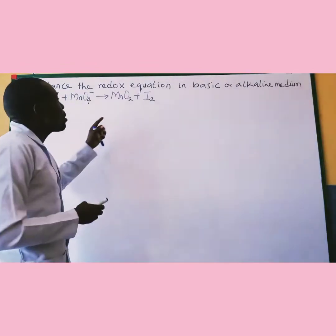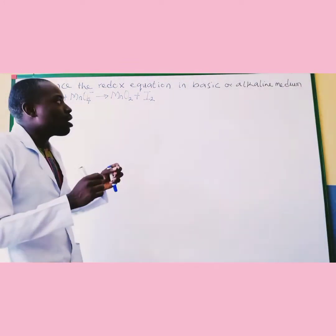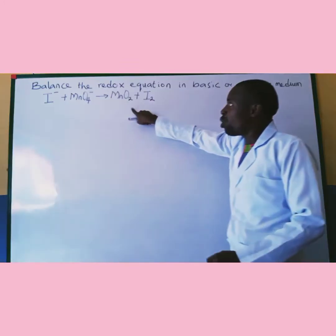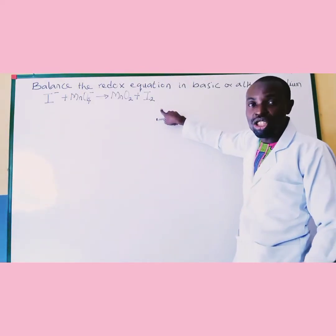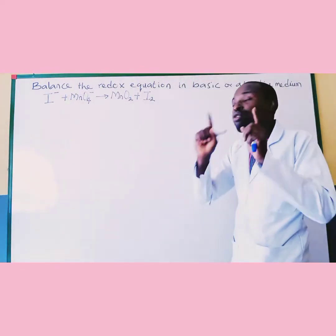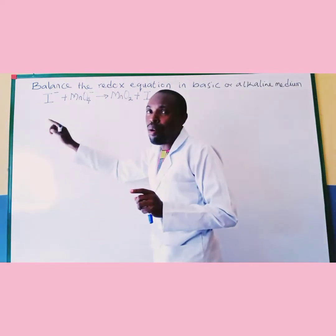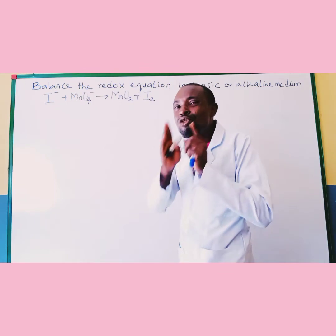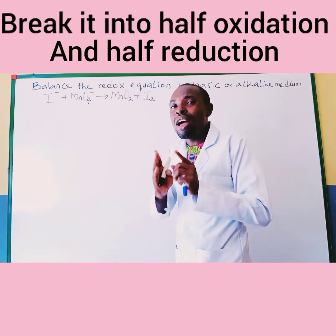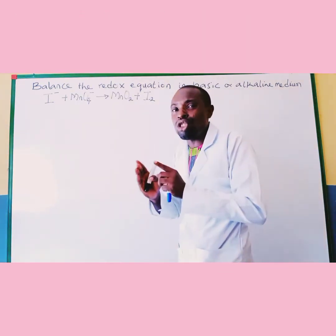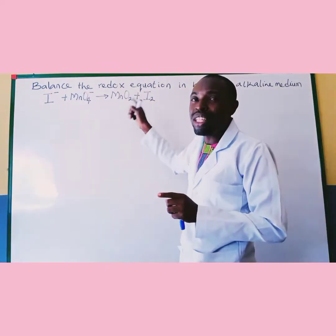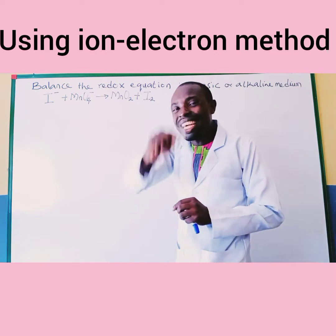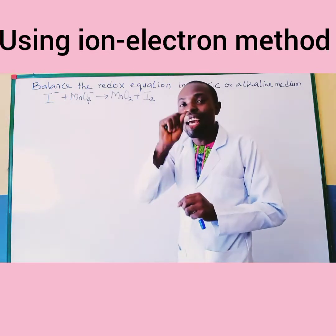Now the question says: balance the redox equation in basic or alkaline medium, and this is the equation for the reaction right here on the board. The first step is to break it into oxidation and reduction — into a half reduction and half oxidation. This is the beginning of the ion-electron method, which is the method we are using in this case.